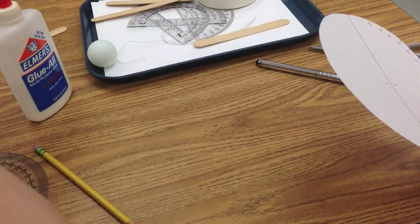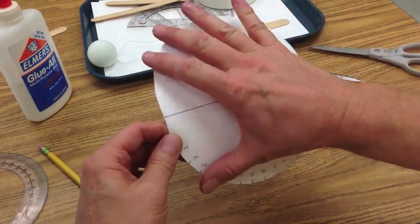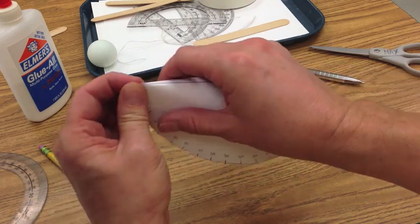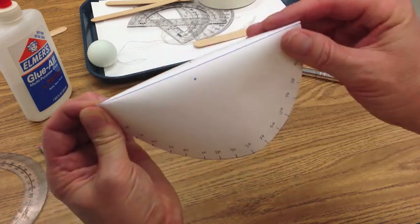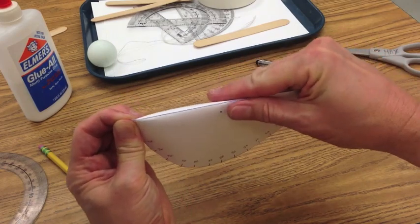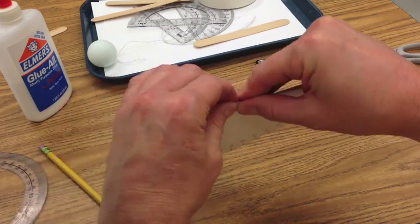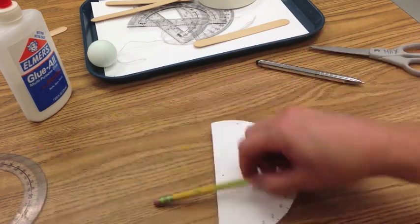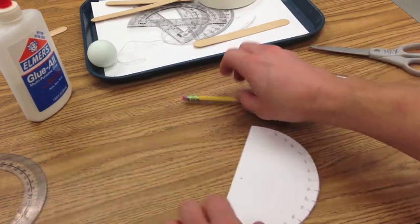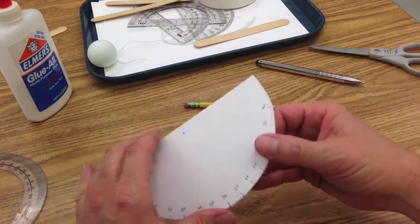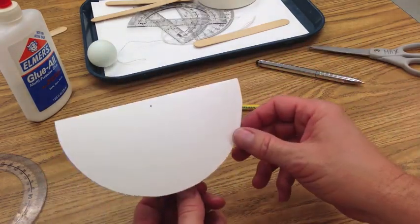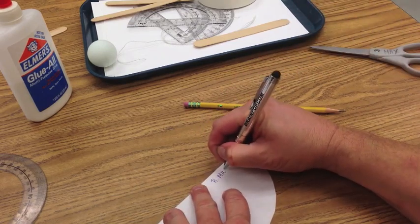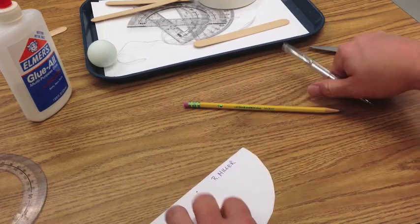Just recycle that. What you want to do is make sure you crease it right there. Make sure you get it right on the line. So, you have it like this. It opens up. Back. In the back. Put your name. Here.